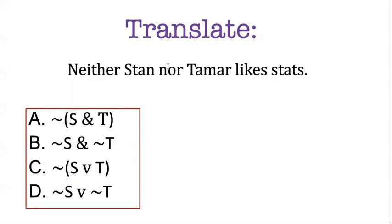Which answer is correct? Nor is a lot like "or," so you might think it has to have a disjunction in it — you might think C and D are both correct — but they're not. Let's think through the logical commitment: "neither Stan nor Tamar likes stats" means Stan does not like stats AND Tamar does not like stats. They both have to not like stats. So B is correct: ¬S ∧ ¬T. Even though there's no "and" in the surface grammar, we want to capture the logical commitment.